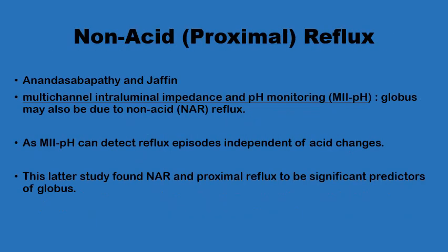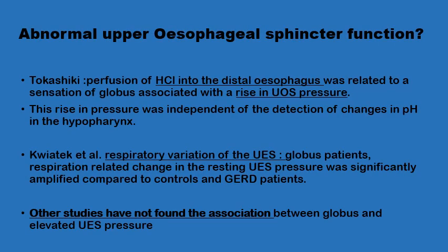Another variant is non-acid proximal reflux. Using multichannel manometry and pH monitoring, it has been shown that globus sensation can still be reported independent of acid changes — it can be due to a non-acid refluxate reaching the proximal part of the oesophagus. Apart from the direct effect of reflux conditions, whether acidic or non-acidic, another proposed mechanism is related to the effect on the upper oesophageal sphincter. Applying diluted hydrochloric acid to the distal oesophagus has been shown to induce hypertonicity of the upper oesophageal sphincter, markedly elevating its pressure.